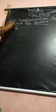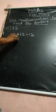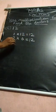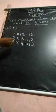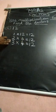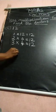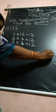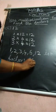Next number: 12. Start from 1. 1, 12s are 12. 2 tables — when will 12 come? 2, 6s are 12. 3 tables — 3, 4s are 12. Again 4 — but 4 came before itself. So write the factors of 12: 1, 2, 3, 4, 6, 12 are the factors of 12.